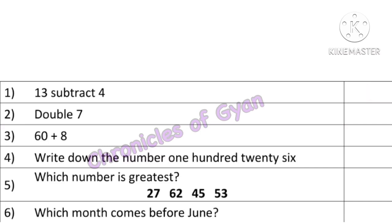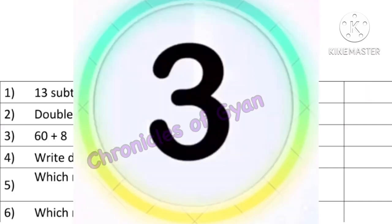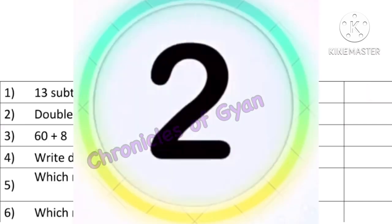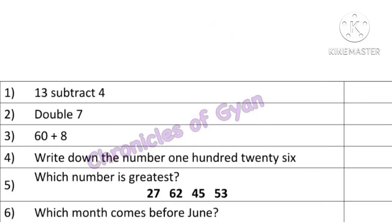Question 2: Double 7. Double 7 means 2 times 7, so 7 plus 7 is 14.